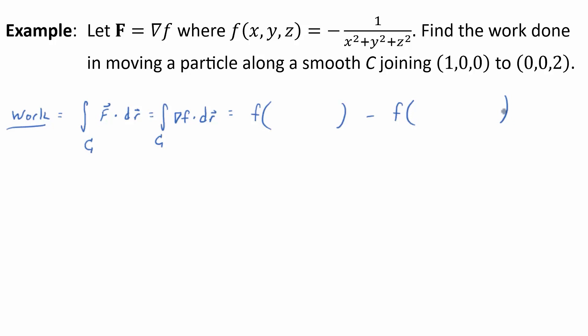So, what goes in for the function, the input for the end point? 0, 0, 2. So, yeah, you plug in all three coordinates, and the beginning point, 1, 0, 0. That's what the theorem says. And we just have to evaluate this.